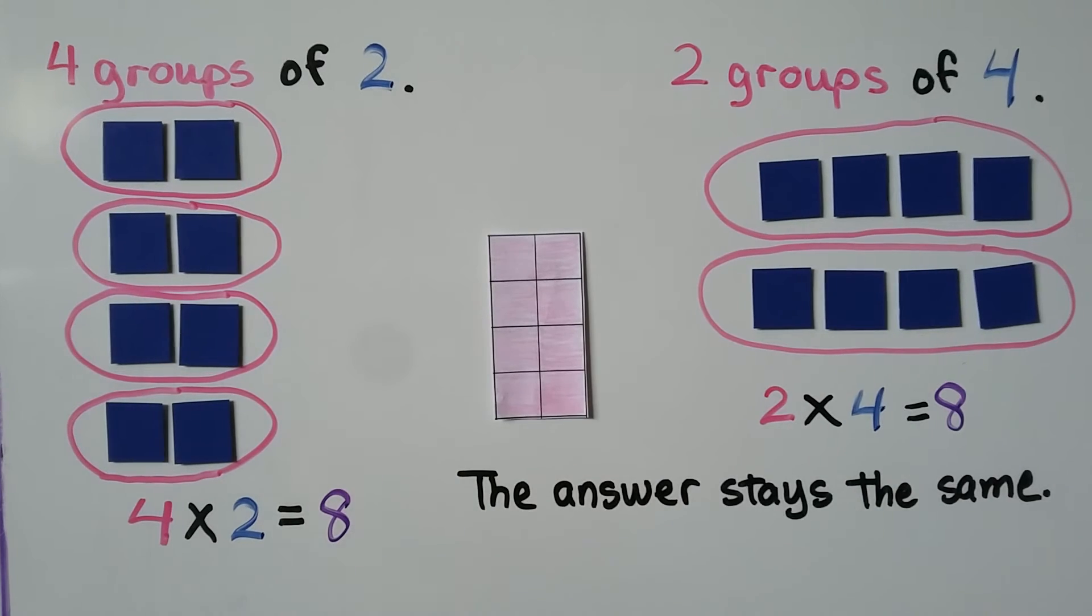If we take our little red boxes here and we make it like four groups of two, like this one, and we turn it sideways to be two groups of four, the number of boxes didn't change. It stayed the same. We still have eight little boxes. So it doesn't matter if we have four groups of two or two groups of four. Our answer is going to stay the same.